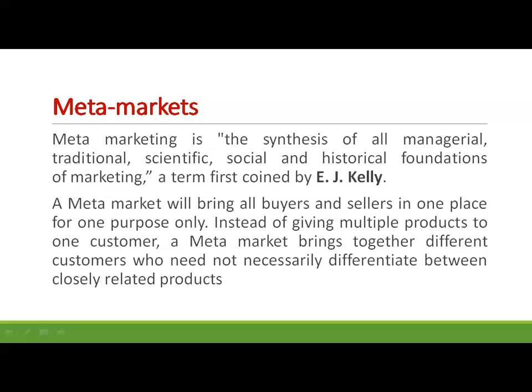Metamarkets bring together different consumers who need to differentiate between closely related products. A metamarket is thus a place where everything connected with a certain market can be found. For example, a car metamarket would be a website that sells cars but also provides car parts, add-ons for cars, colors of cars, mechanics, and reviews. Put simply, a metamarket of a certain market is a market where you can find everything about that market, besides other markets that are strongly connected to it.